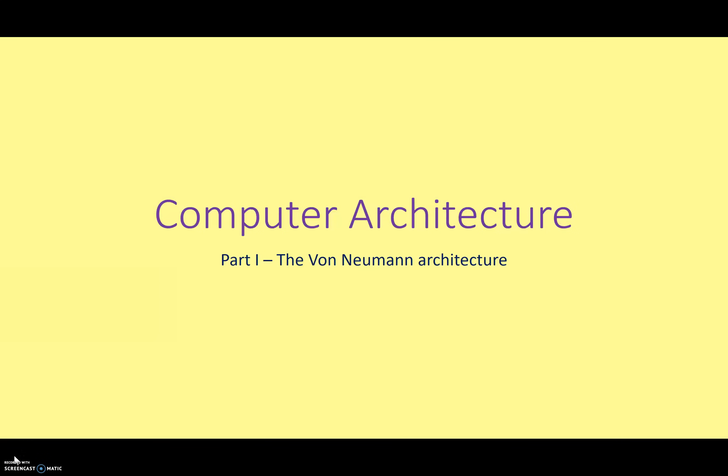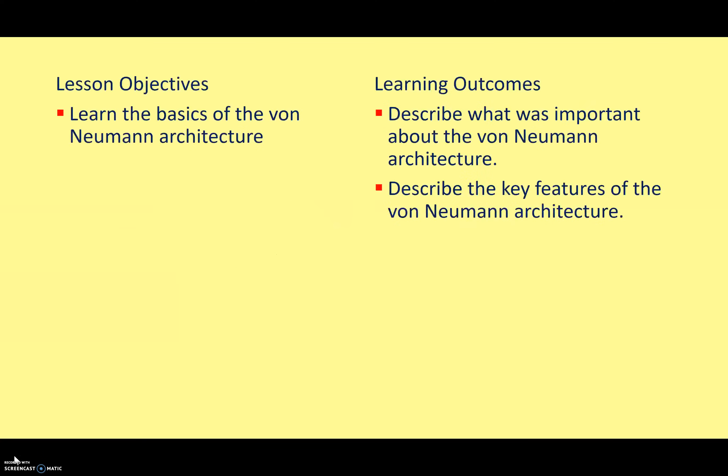Hello everyone, welcome to a series of lectures on computer architecture. Today I'm going to start by looking at the design of modern computer systems and where it comes from. What are the key features that we find in any computer system and why do we have them? That means looking at what we call the von Neumann architecture. We're going to learn the basics of von Neumann architecture today, and by the end of the lesson I hope you'll be able to describe what was important about it and describe its key features.